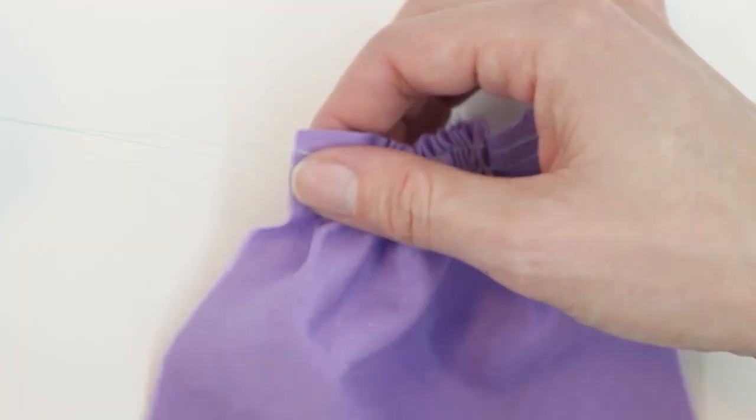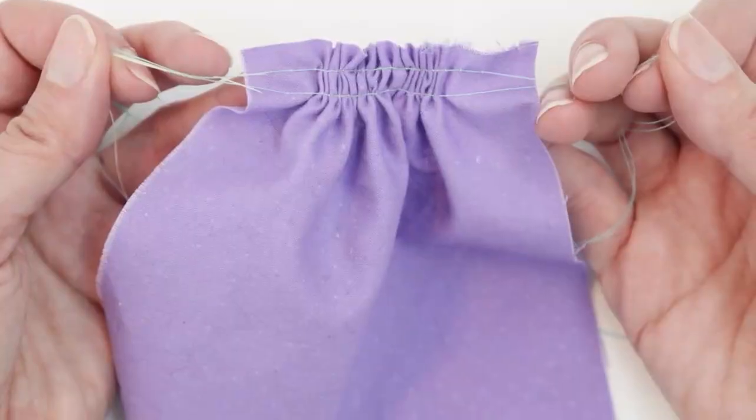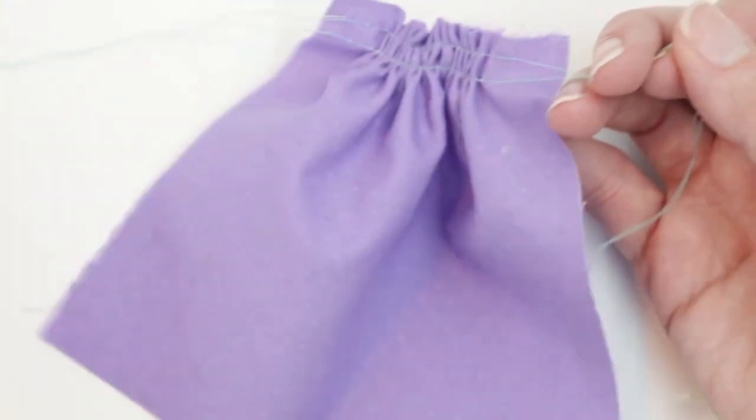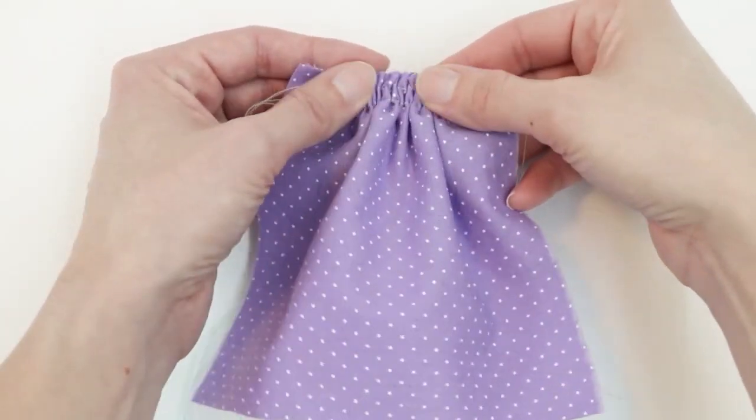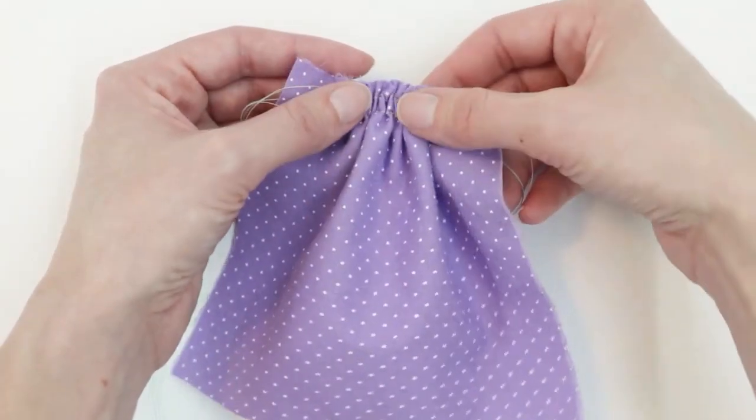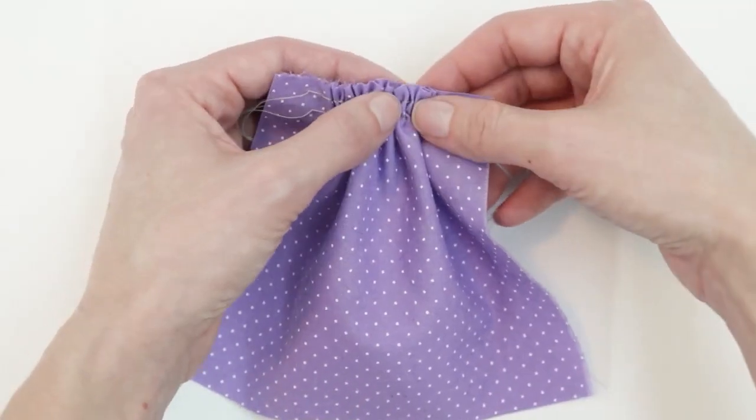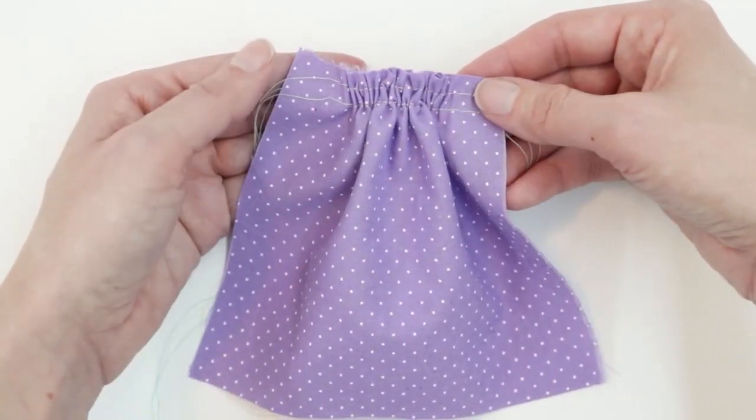And depending on how full or how subtle you want your gathers to appear you can slide the fabric as much as you prefer. And you can see that we now have a nice gathered section in our fabric and you can also see how this section is nice and flat which helps when we're sewing it to something else.